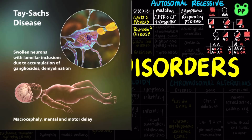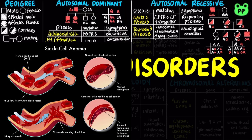Tay-Sachs disease is an autosomal recessive disorder caused by deficiency in lysosomal hexosaminidase A, causing the accumulation of gangliosides, which in turn leads to destruction of nerve cells in the brain and spinal cord.